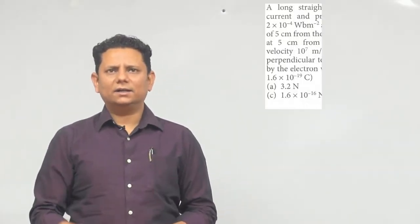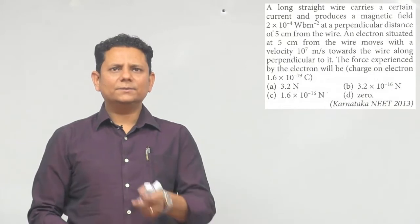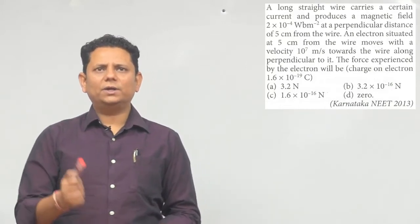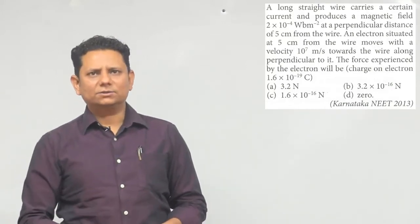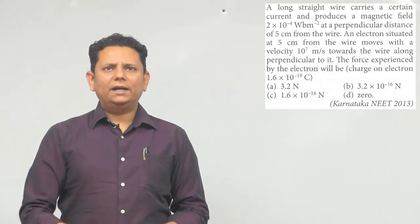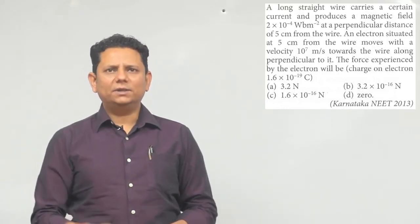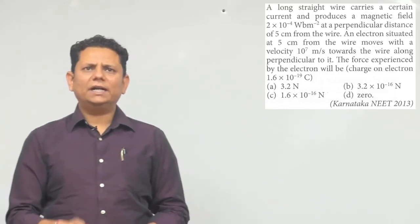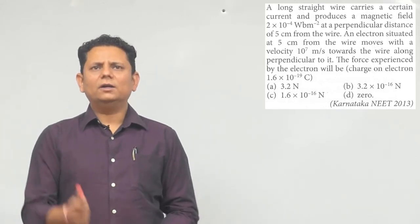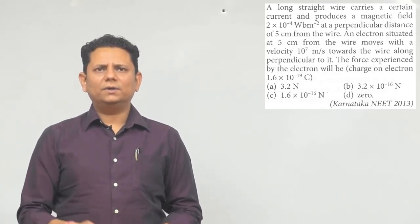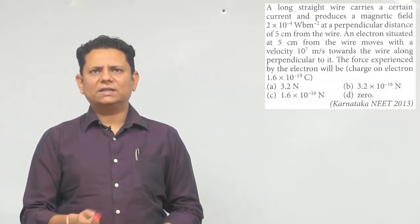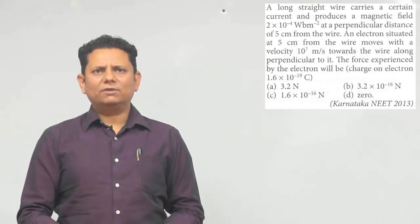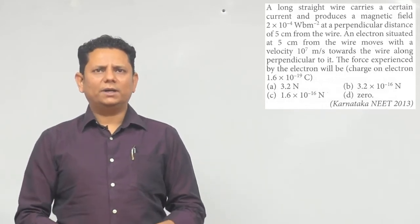Next question: A long straight wire carries a certain current and produces a magnetic field of 2 into 10 to the power minus 4 Weber per meter square at a perpendicular distance of 5 centimeter from the wire. The electron situated at 5 centimeter from the wire moves with the velocity of 10 to the power 7 meter per second towards the wire along perpendicular to it.